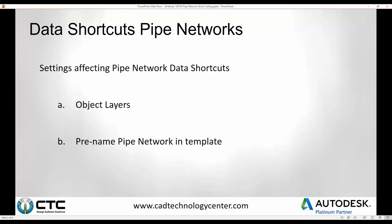A couple of the key settings and ways to set things up that we're going to be going over are object layers. I'll show you where that is — it'll be a key setup point. There's a specific way to set things up when it comes to data referencing the pipe networks that we find works really well and gives you the most flexibility. We'll also talk about pre-naming pipe networks in your template, so that when somebody opens up their sanitary or storm drawing, they already have the pipe networks they want built in Prospector. That's another key concept — not completely necessary, but certainly recommended.